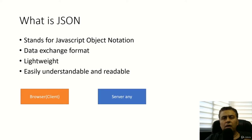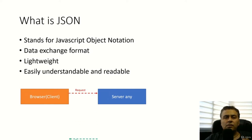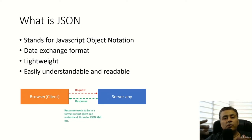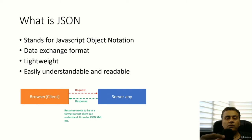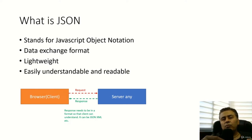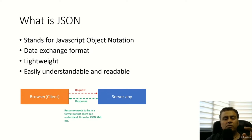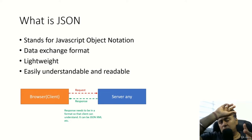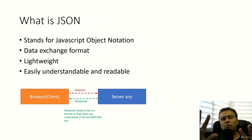For example, we have a browser — anything which is a client — and we have a server, which can be Node.js, ASP.NET, or any server. Normally the client sends a request and the server sends a response. But the response has to be in a particular format so the browser can understand and display it. That response format can be JSON, which is what we are going to cover, or it can be XML. That's where this format of data comes in.